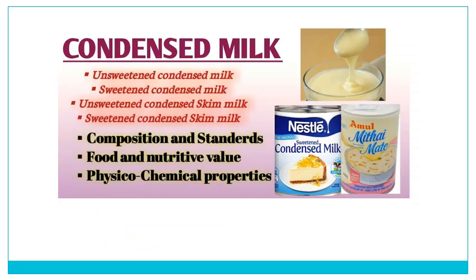Condensed milk can be two different varieties: one is full cream milk and another is skim milk. In case of full cream milk we can have unsweetened or sweetened, and in case of skim milk also we can have unsweetened and sweetened. When it is sweetened condensed milk it is truly called condensed milk, whereas when it is unsweetened it is called evaporated milk because it undergoes sterilization since there is no sugar. In sweetened condensed milk, sugar itself plays an important role as a preservative.